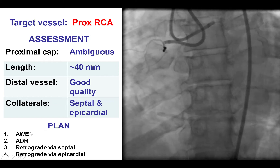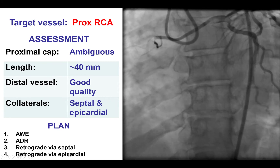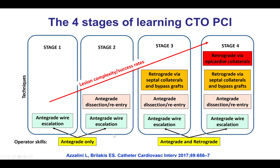Our plan was to start with antegrade wire escalation, followed by ADR, then retrograde via septals, and retrograde via epicardials. This reflects the usual learning progression for CTO-PCI: starting with simpler, less risky techniques such as antegrade wire escalation, then antegrade dissection and re-entry, then retrograde via septal collaterals and bypass grafts, and finally retrograde via epicardial collaterals as the last stage. Similarly in this case, we planned to go from simpler to more complex procedural attempts.